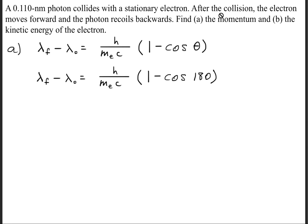And we were told that after the collision, the electron moves forward and the photon recoils backwards. So that description alone tells us that the scattering angle will be 180 degrees.